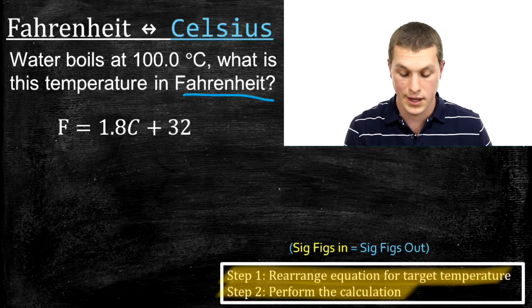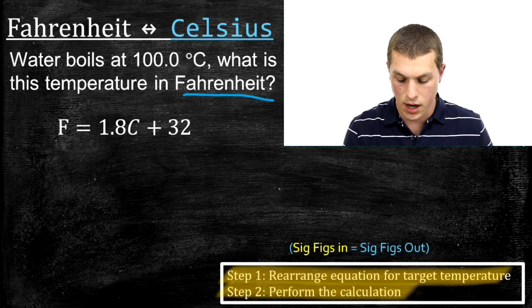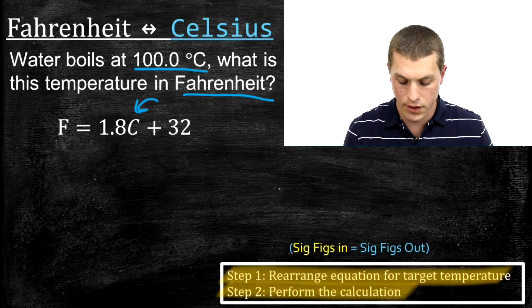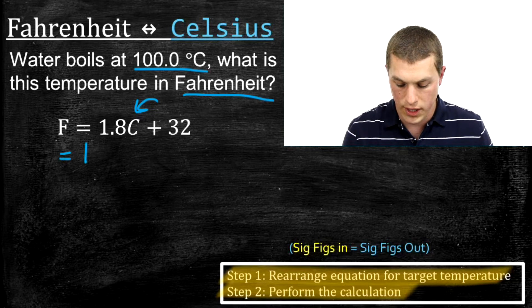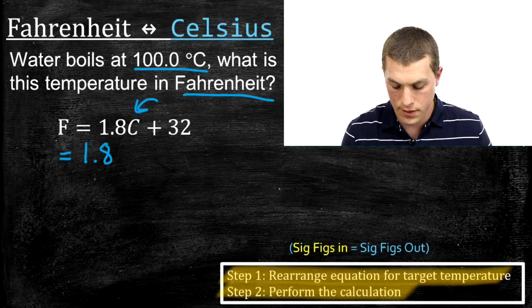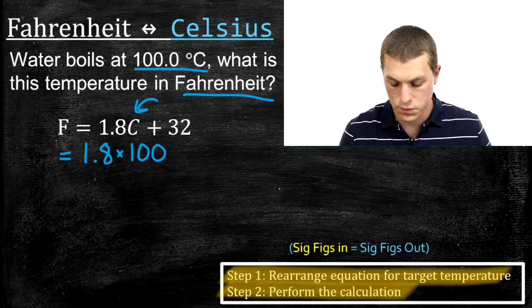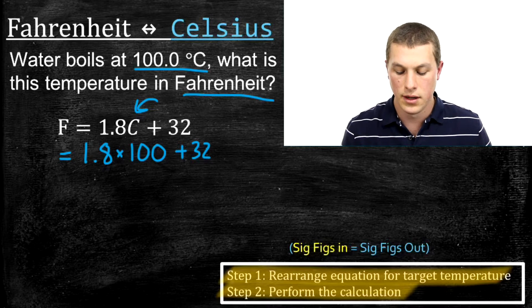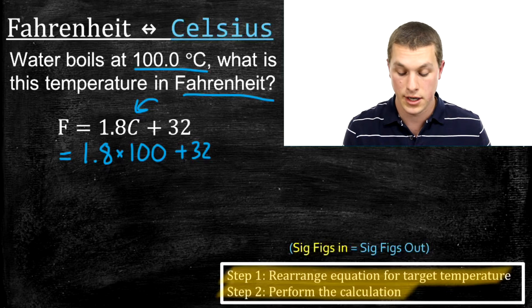Step two is to perform the calculation. We plug in 100 degrees Celsius for C, giving us F equals 1.8 times 100 plus 32. In the calculator, 1.8 times 100 is 180, and adding 32 gives us 212.